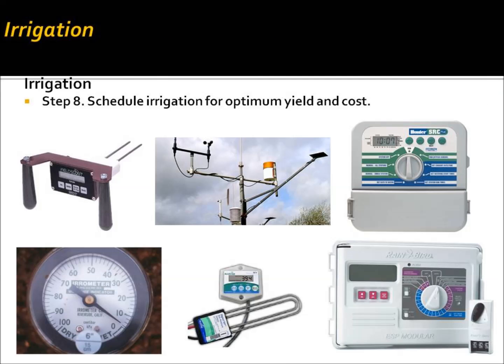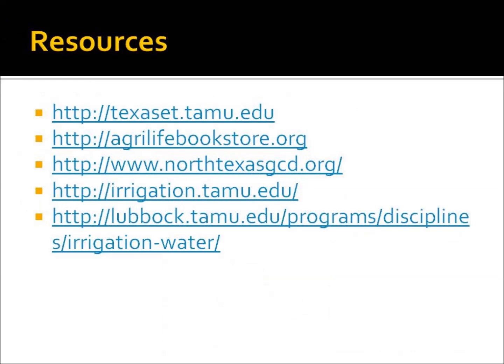Step eight is scheduling your irrigation system for optimum yield and cost. It's important to consider utilizing moisture meters to determine if your irrigation system is functioning properly and if you're applying a sufficient amount of water frequently enough. You may also consider utilizing a weather station or ET controller that provides information on evapotranspiration rate to efficiently determine when to schedule irrigation. Here's a variety of resources available to help with your irrigation system. If you have any questions, please feel free to leave comments below and we'll try to answer them. Thank you very much.